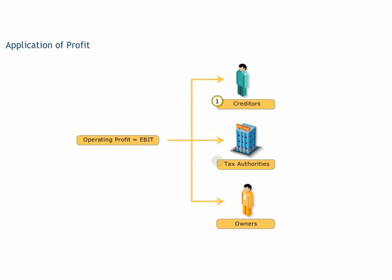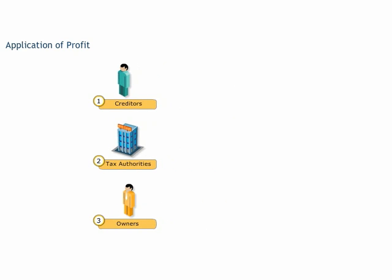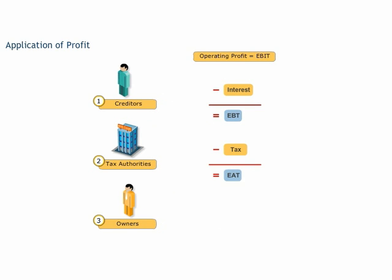There is a fixed order of distribution of profits. First, interest payable to creditors is deducted from the operating profit. The balance amount is called the net profit, or earnings before tax. Next, tax payable to the government is deducted from the value of earnings before tax. The balance amount is called earnings after tax.